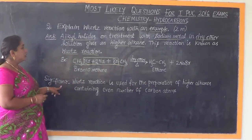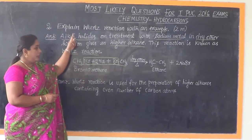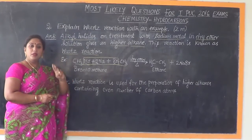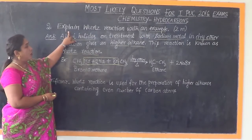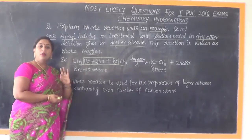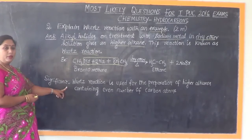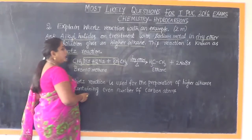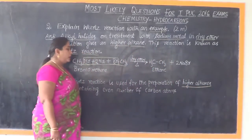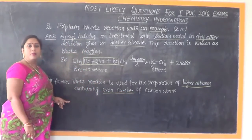Now let us consider the significance of Wurtz reaction, which may be asked as an added question worth three marks. They might ask: explain Wurtz reaction with an example — and also ask for its significance or where it is used. The answer is that Wurtz reaction is used in the preparation of higher alkanes containing an even number of carbon atoms.